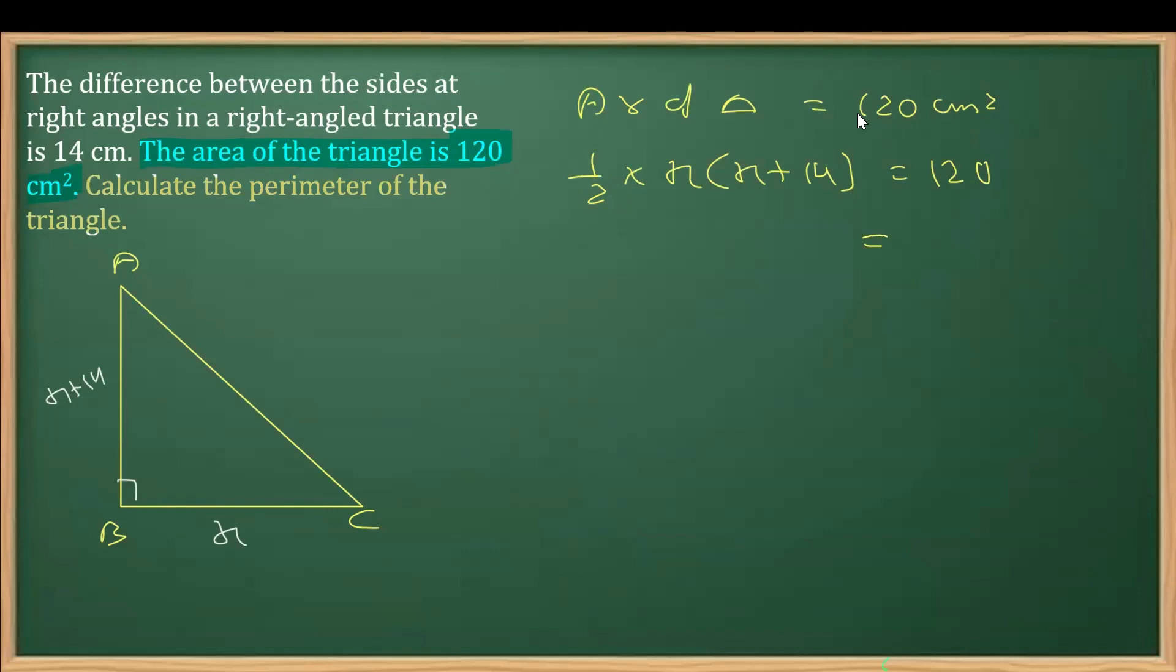Next I'm going to transpose this 2 to the other side, so 120 into 2 right should give you 240, and this is x square plus 14x on opening this bracket.